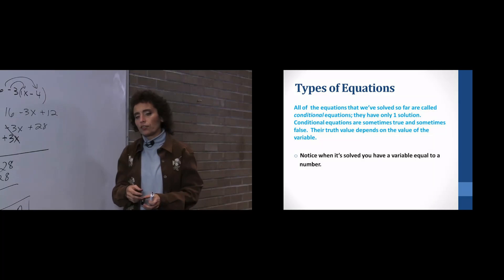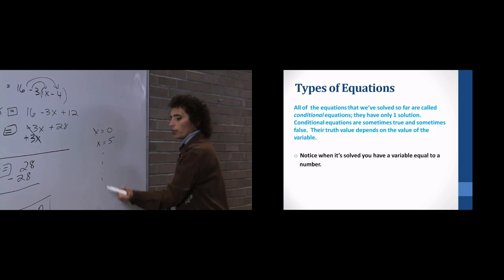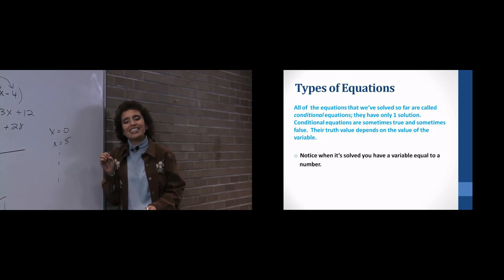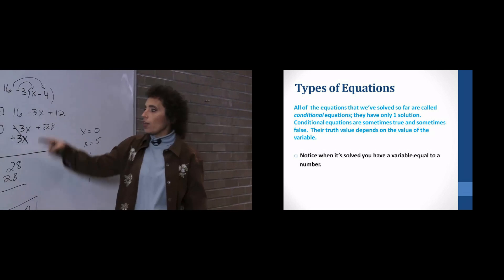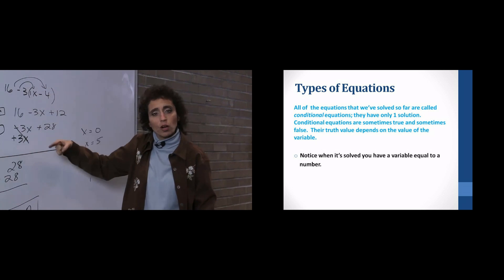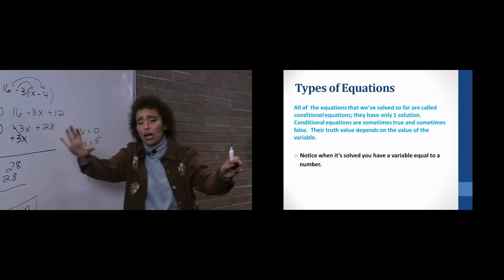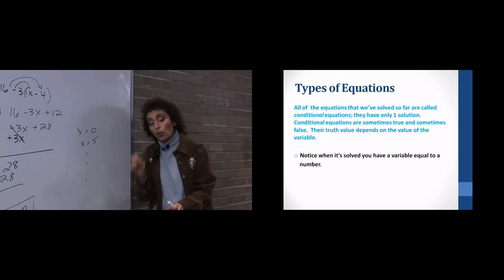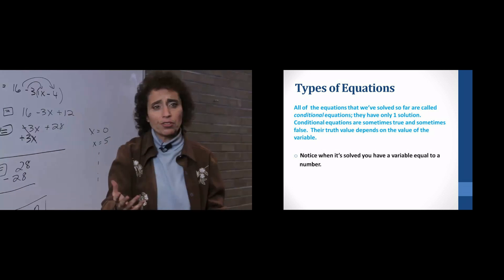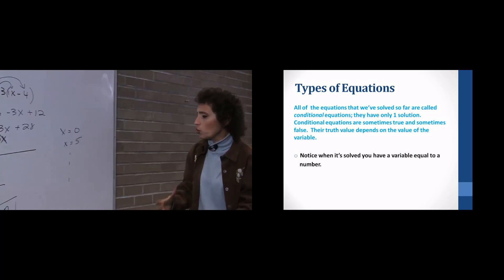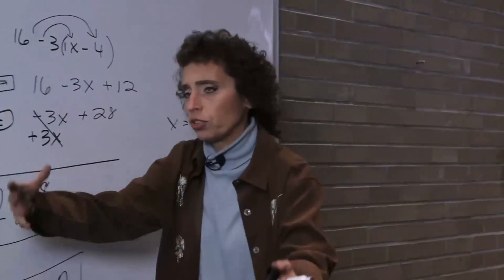Now notice — all of the equations we've solved have x equals something: x equals 0, x equals 5, whatever. All of those equations are called conditional equations. That means they are true based on a condition. If this says x equals 0, that means this is true only when x is 0. On the condition that x is 0, that makes this true. Anything where we have x equals some number is a conditional equation, and that's everything we've solved in this course so far.